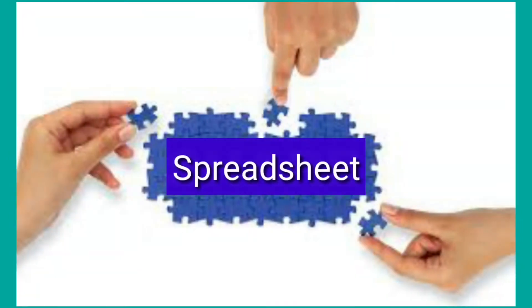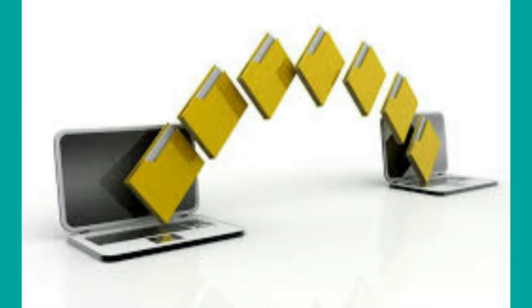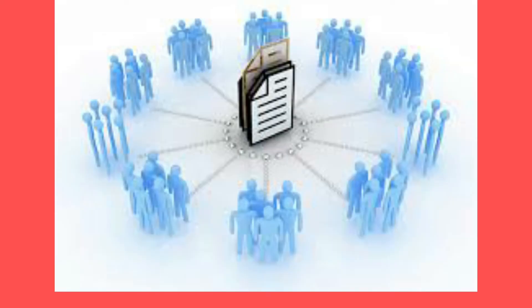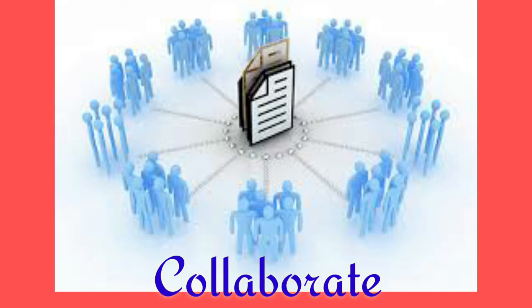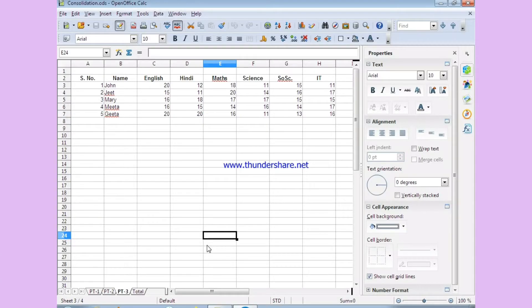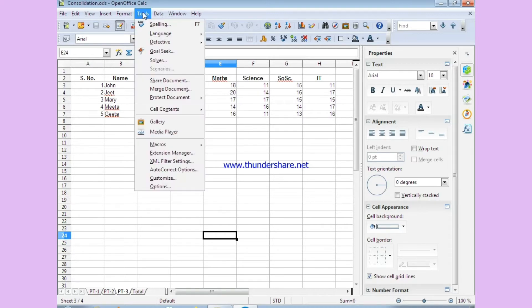The same spreadsheet can be used by multiple users simultaneously. They can save the changes and share the document. When multiple users are using the same spreadsheet, they are set to collaborate. For the collaboration, the users have to register themselves. To register for the collaboration, first you have to open the spreadsheet that you want to collaborate on. After opening the spreadsheet, you have to go to the Tools tab and click on Options.